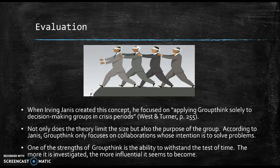For example, groupthink can occur between two individuals or in groups larger than 15. Not only does the theory limit the size, but also the purpose of the group. According to Janus, groupthink only focuses on collaborations whose intention is to solve problems. Task-oriented and problem-solving groups only try to change and make resolutions on an issue. The theory does not illustrate that people can have groupthink outside of meetings where large issues are being addressed. Many times, groupthink can happen in small friend and family groups.